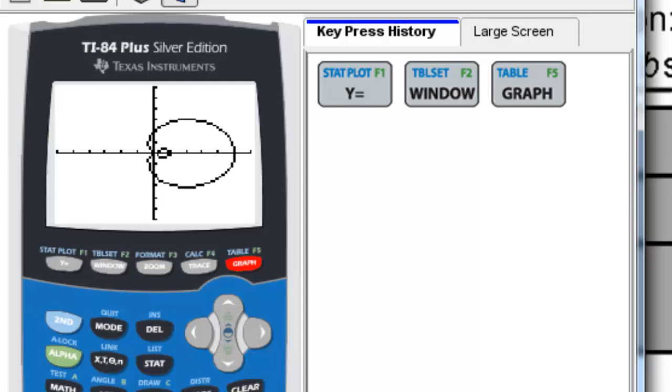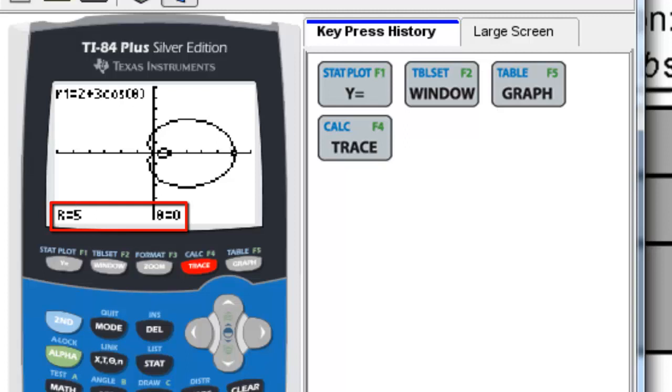I can trace, and you'll notice when I trace, that now my coordinates instead of being x and y are r and theta. And I have my equation up there. If I trace by moving to the right, I can see how my theta values are jumping and my r values are going around. And you can see that as I get closer and closer, at 90 degrees, my r value is 2.